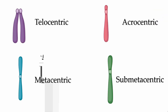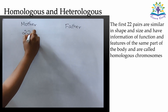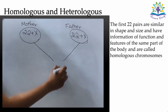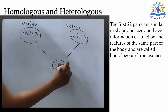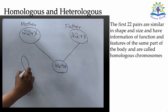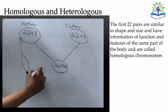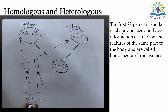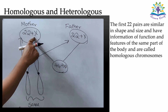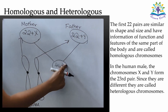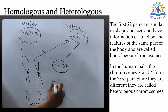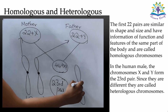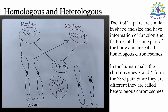Now let's understand what is meant by homologous and heterologous chromosomes. In humans, 23 chromosomes are received from the father and 23 from the mother, which forms 23 pairs. In the first 22 pairs, the chromosomes have similar shape and size and carry information about the function or features of the same part of the body — these are known as homologous chromosomes. In the 23rd pair of a human male, the chromosomes present are X and Y; they are different and therefore called heterologous chromosomes.